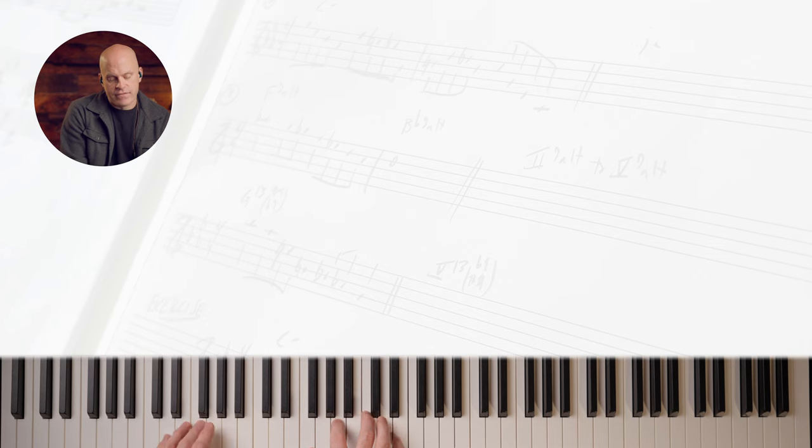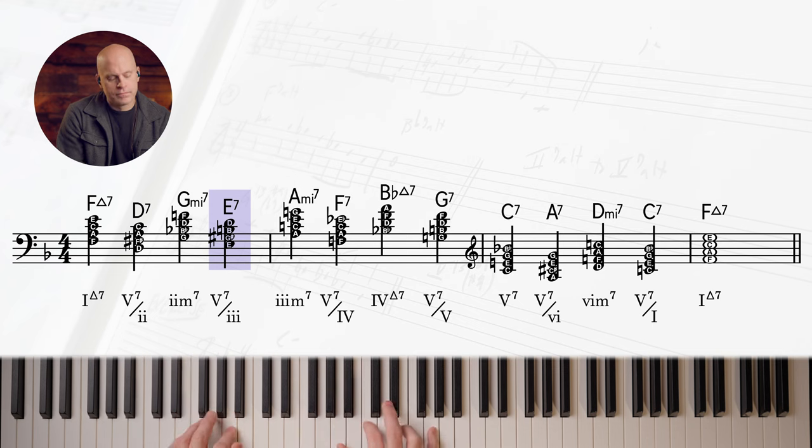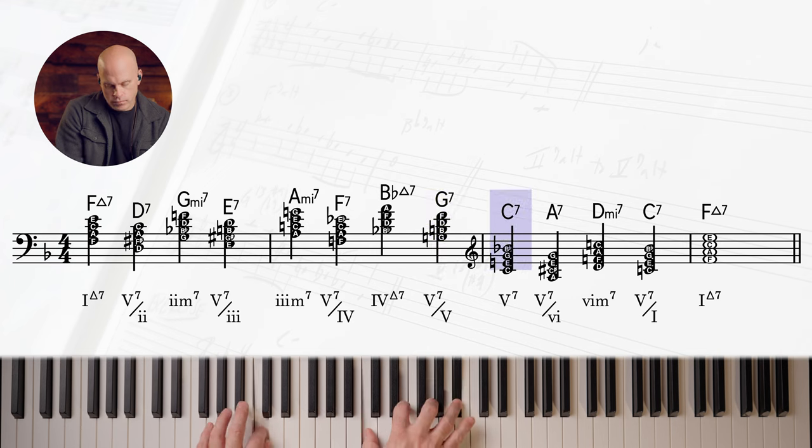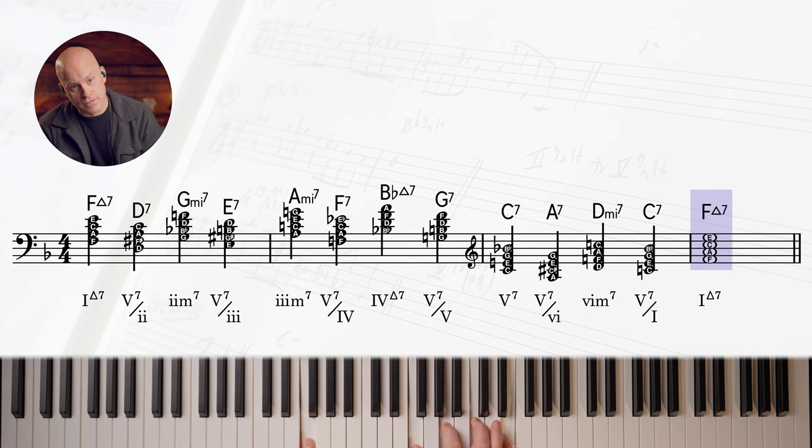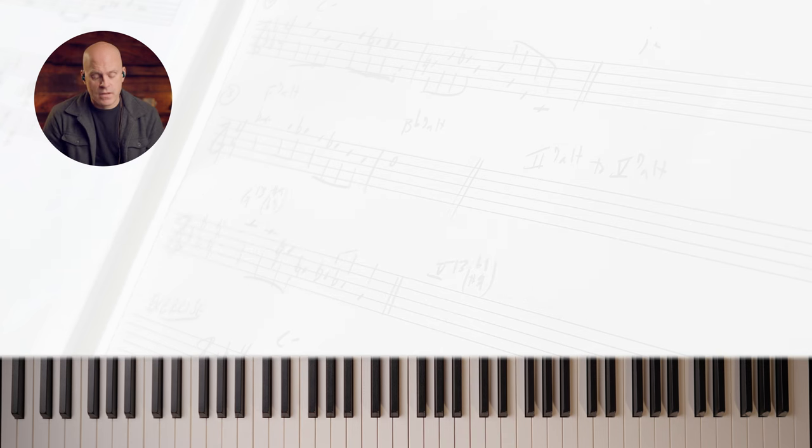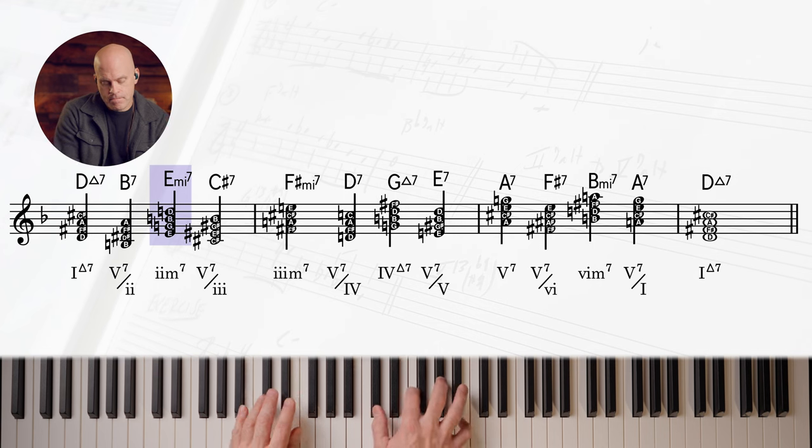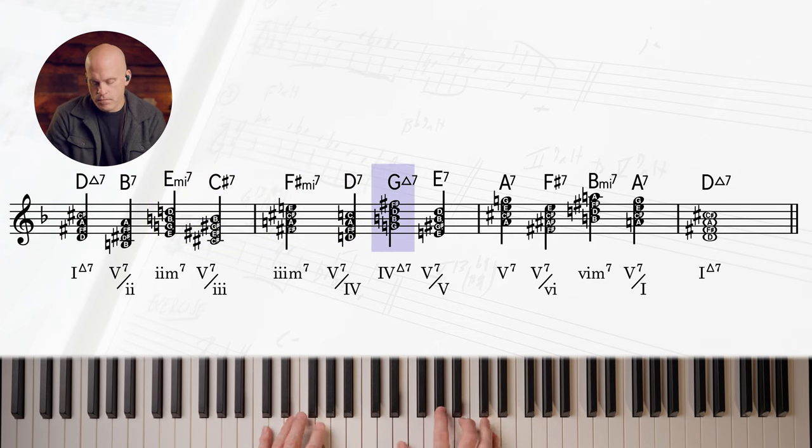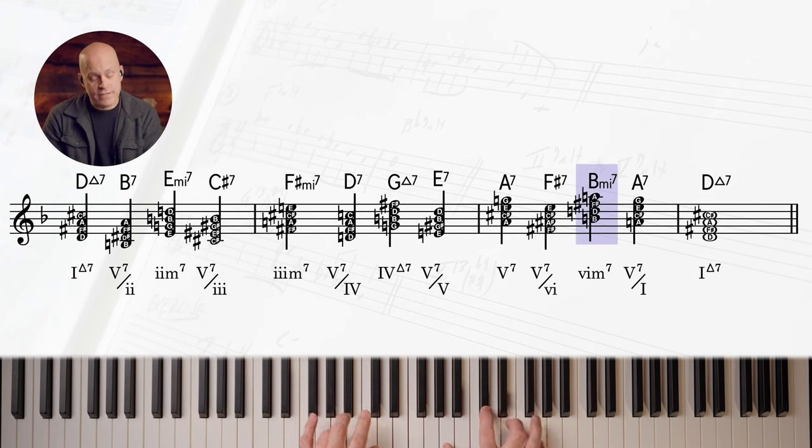Let's check this out in the key of F. We skip the seven and go right to the one. One more, let's do the key of D. Skip the seven, five to the one.